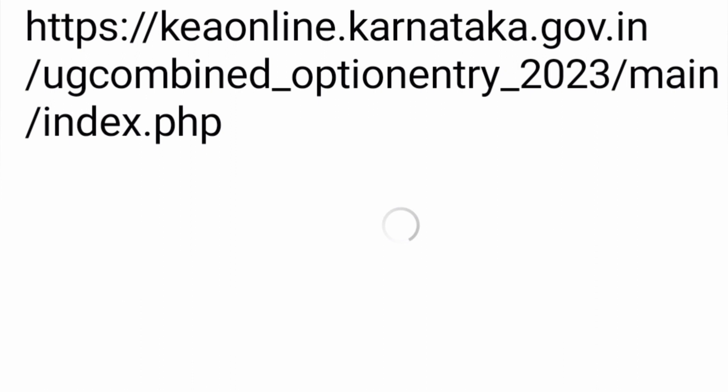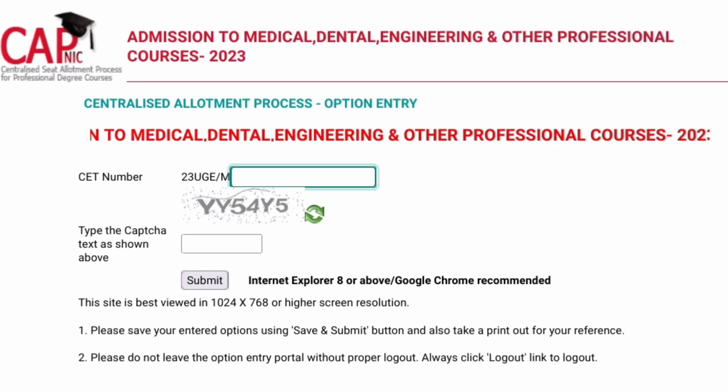The first step is you have to log into the option entry portal. The link is kaonline.karnataka.gov.in/ug_combine_option_entry_23_main_index.php. You have to first log in to this page. Once you go there, it will open to this page, and you can see here: centralized allotment process option entry stream.